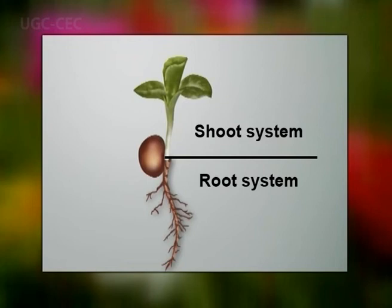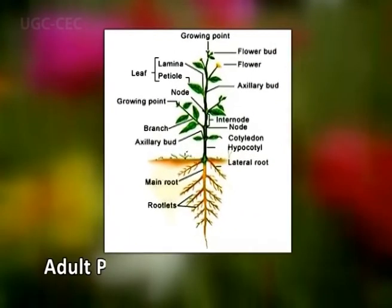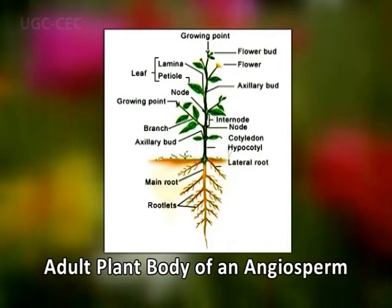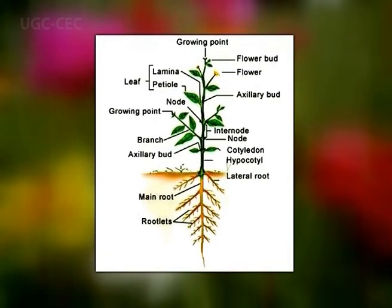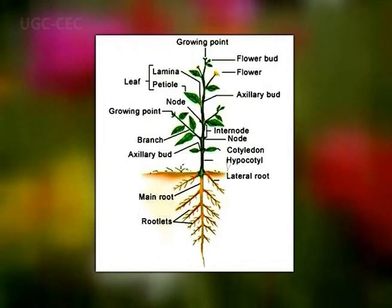The plant body of angiosperms is a sporophyte, differentiated into two regions: the ascending shoot system and the descending root system. The stem is differentiated into nodes and internodes; at the nodes arise leaves, branches, and flowers. Flowers are the reproductive structures. The tip of the stem has a terminal bud that drives linear growth, while in the axil of each leaf there is an axillary bud that gives rise to a branch, inflorescence, or flower.